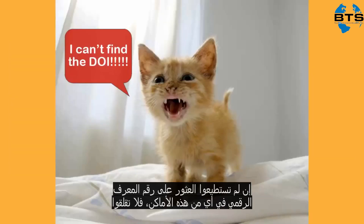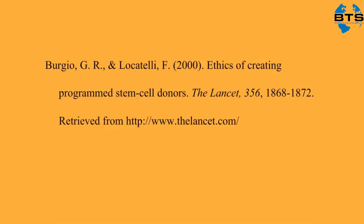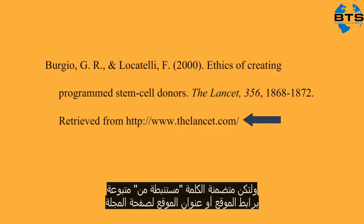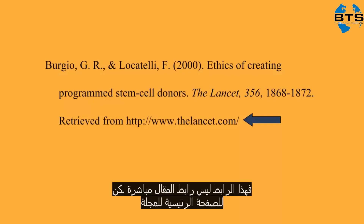If you can't find your article's DOI in any of those places, don't worry. If there's no DOI, follow APA rules and include the words "retrieved from," followed by the URL or web address for the journal homepage. This URL is not the direct URL for the article, but for the journal homepage.